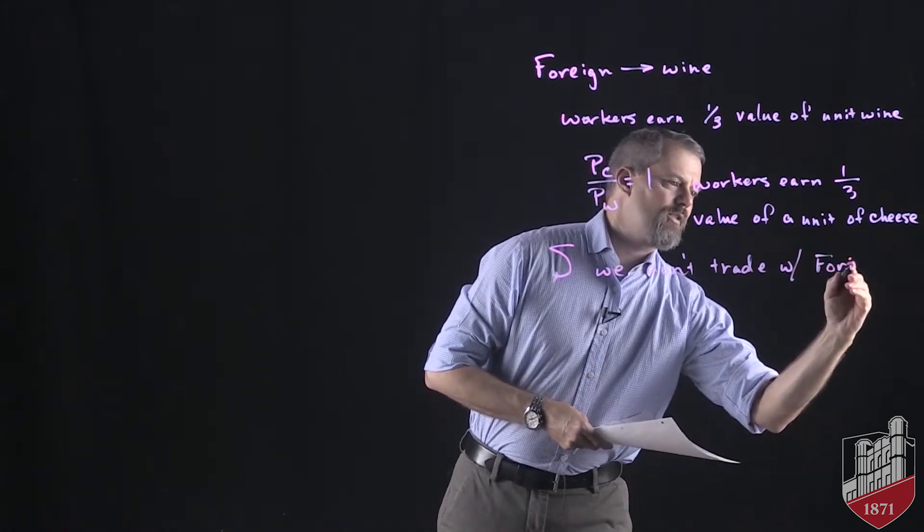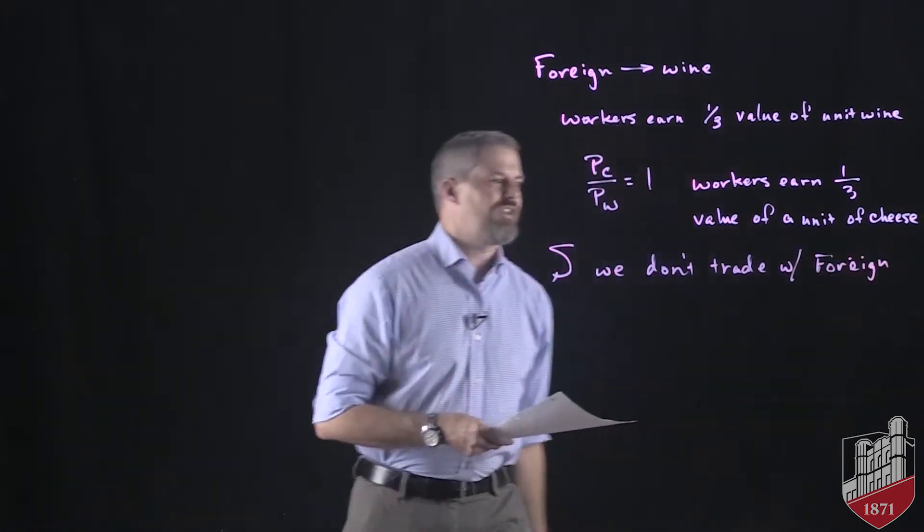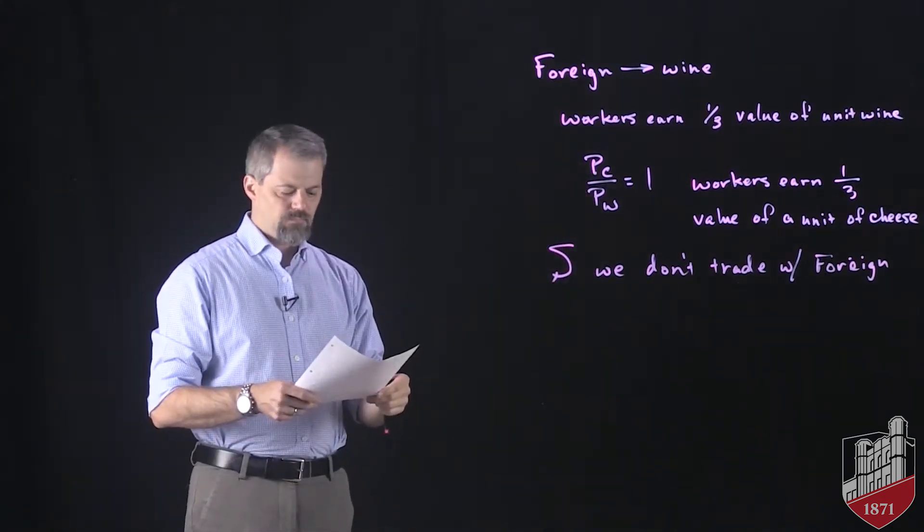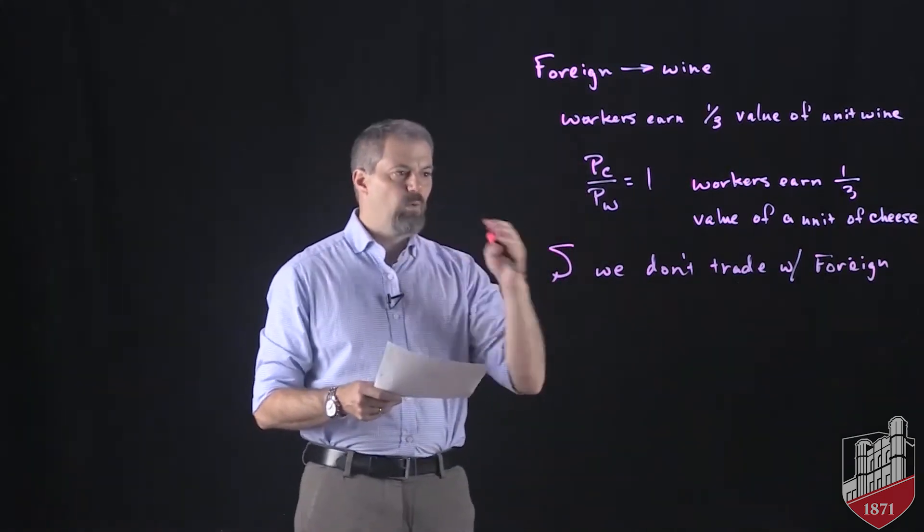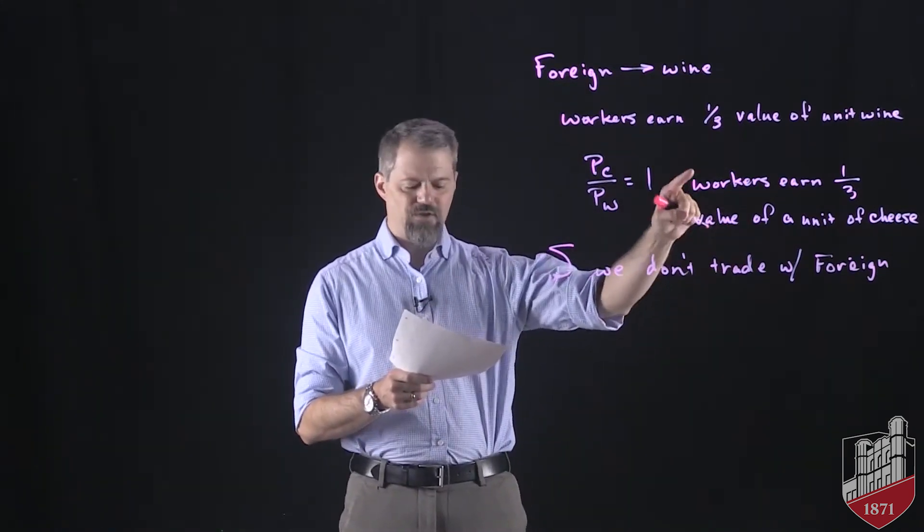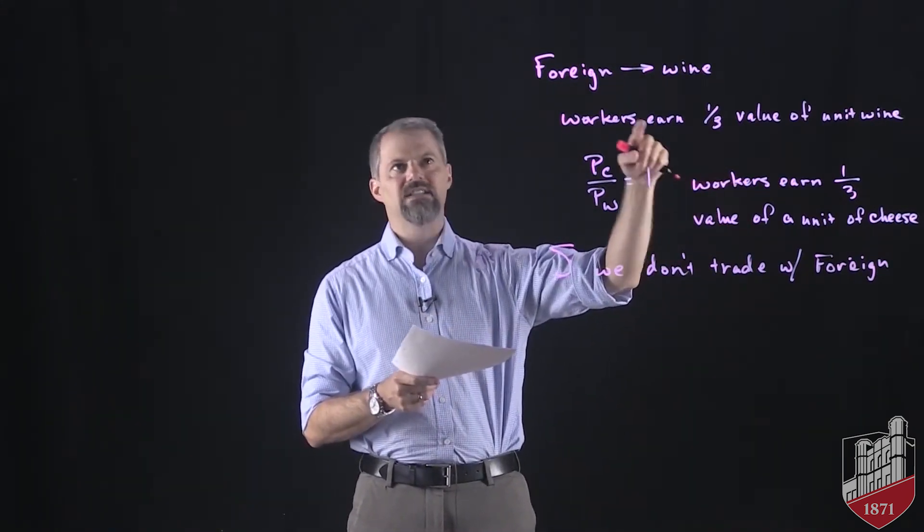Let's think about now the situation that puts foreign workers in. So now what we've got is a situation where the value of a third gallon of wine is equal to one-sixth of a pound of cheese, and I'll explain why here in a second.